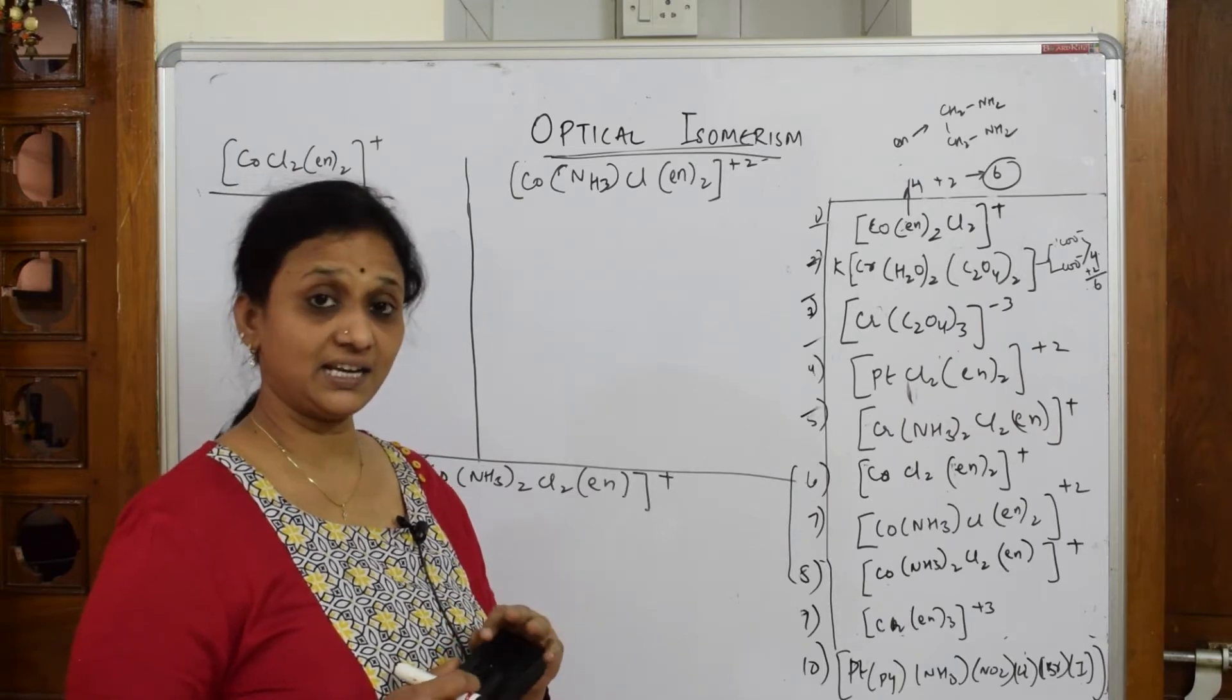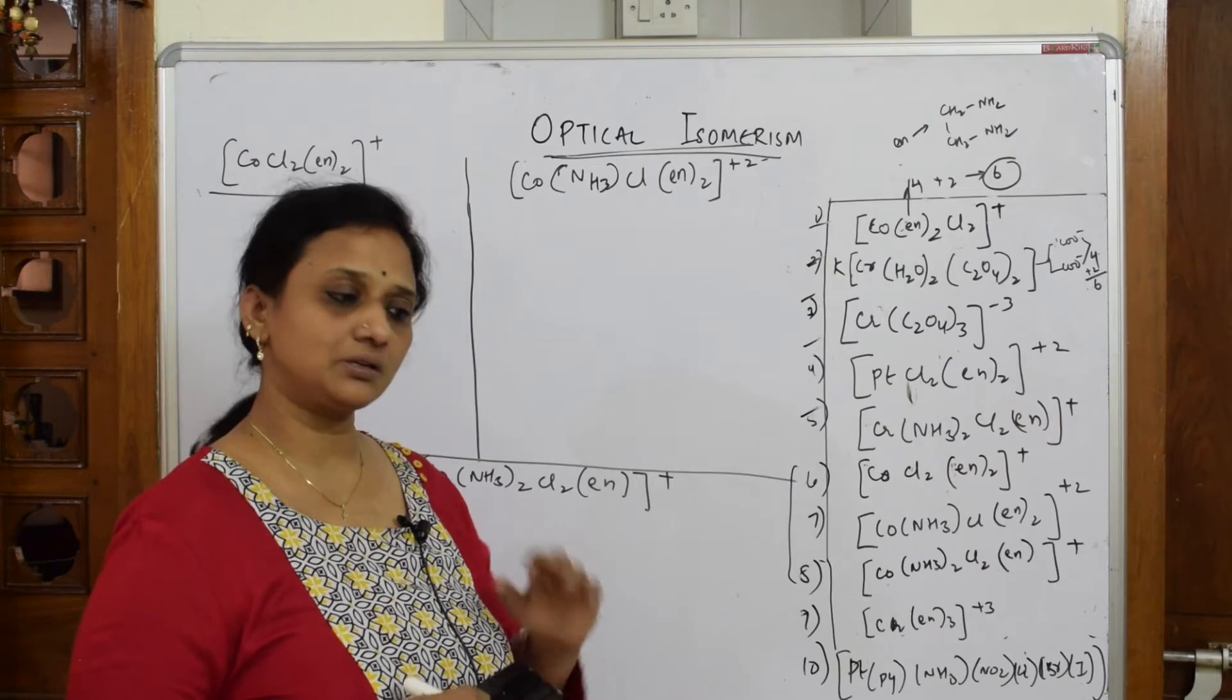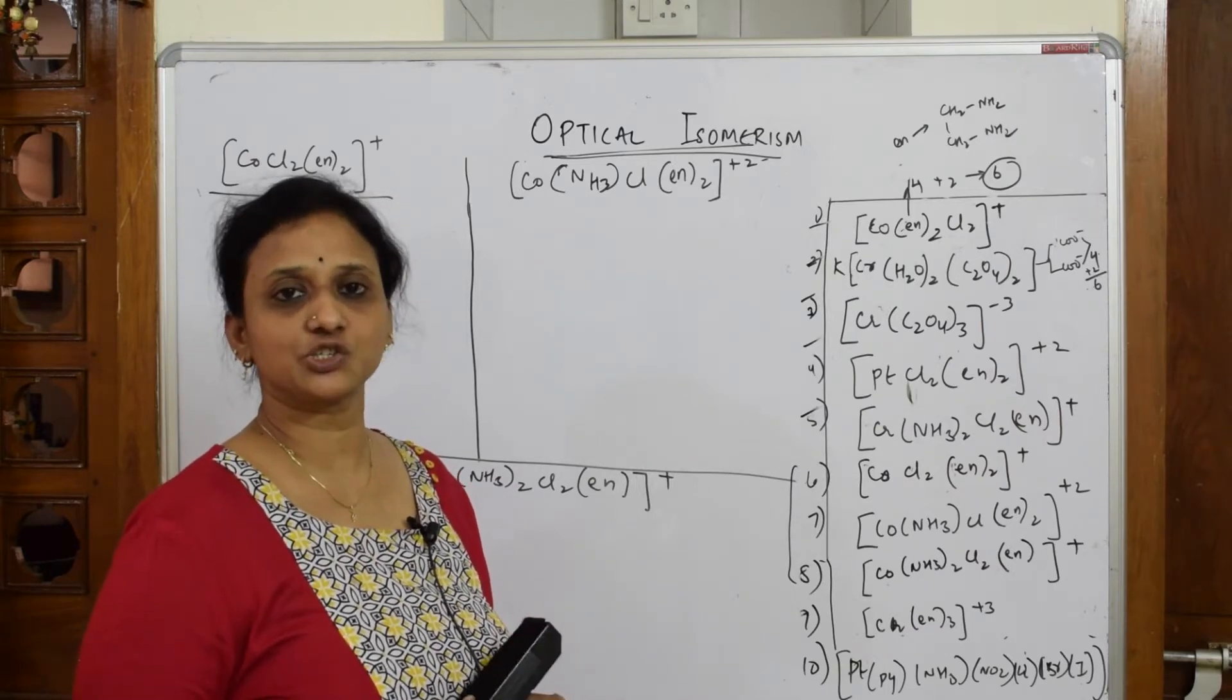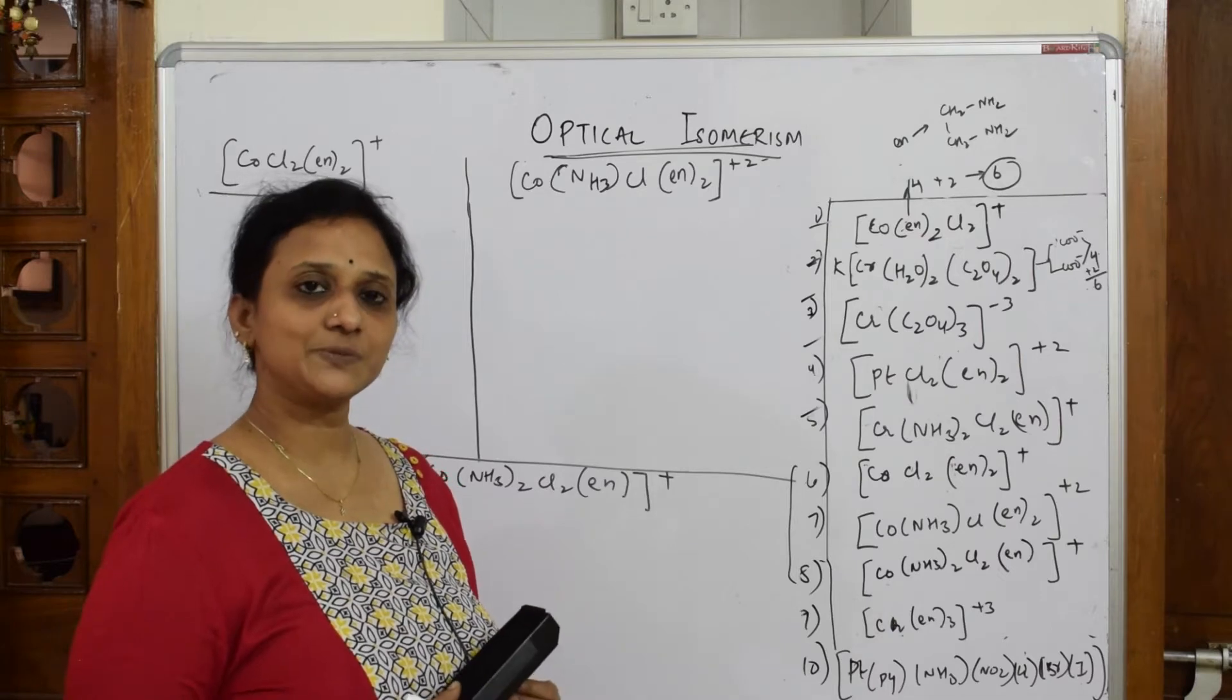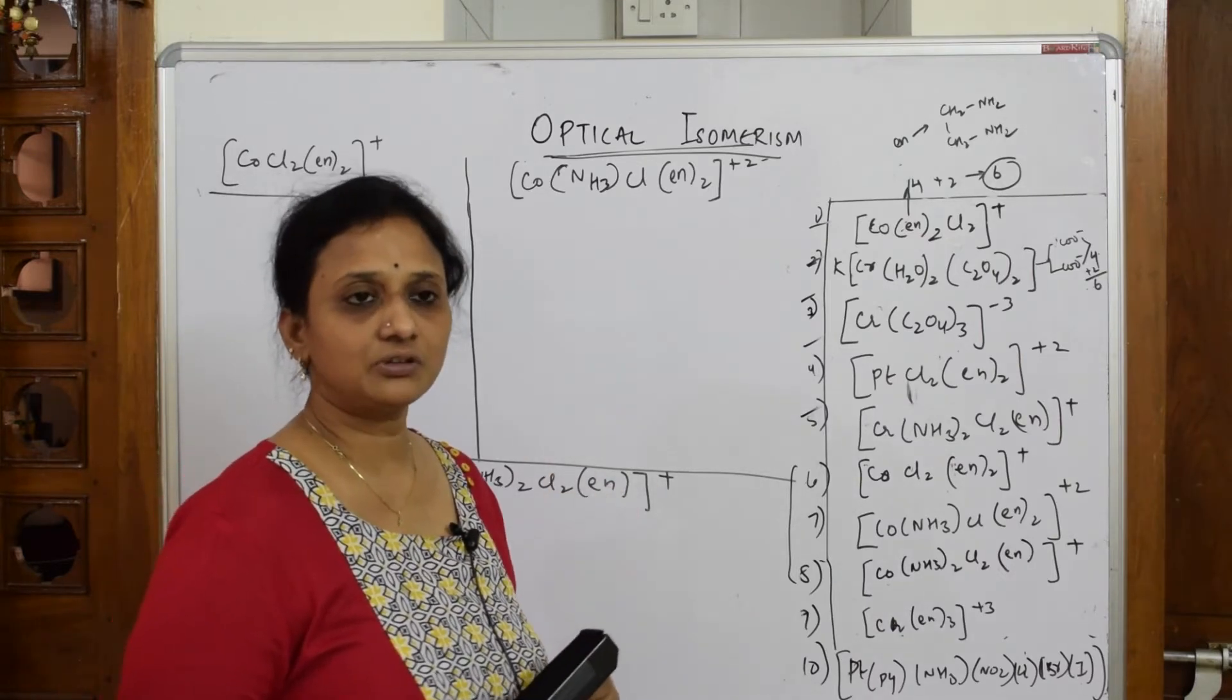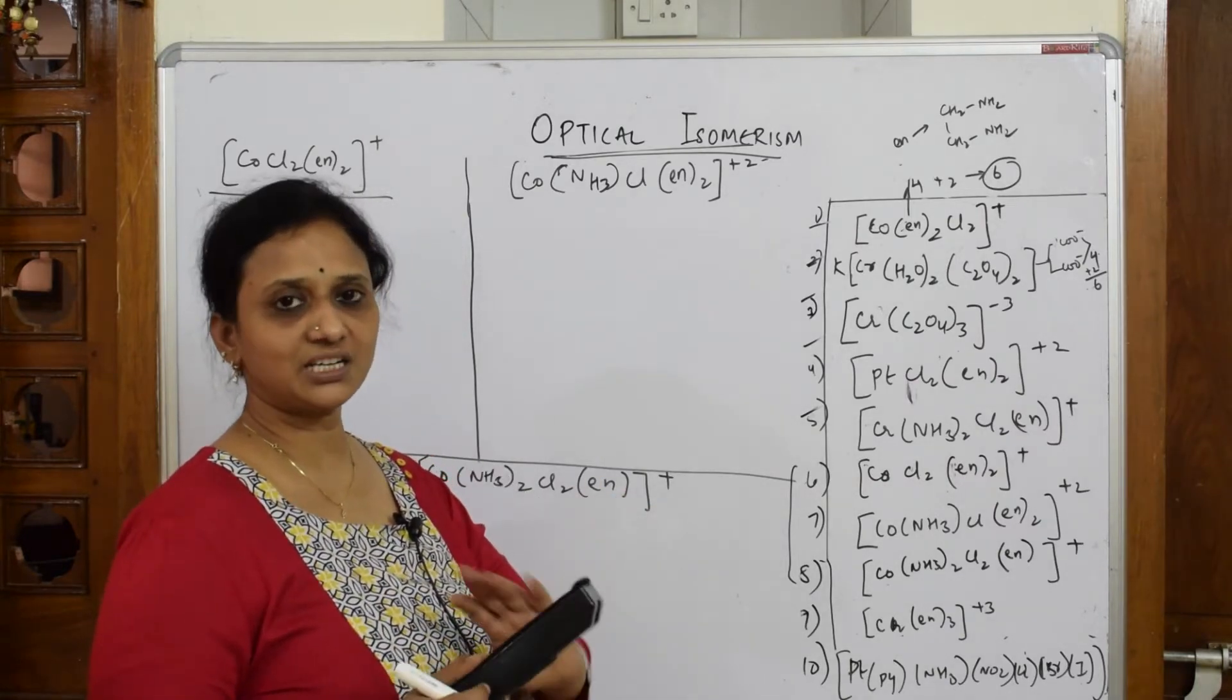They will also question you: is there any geometrical isomer possible for this? Geometrical isomers are cis and trans isomers. Optical isomers are mirror images. So be very careful in drawing them. If you see, first try to make the cis isomer mirror image, then come back to trans.